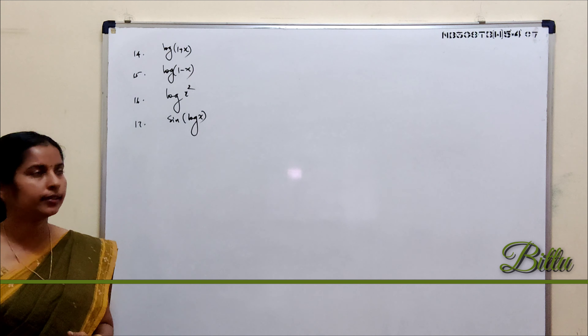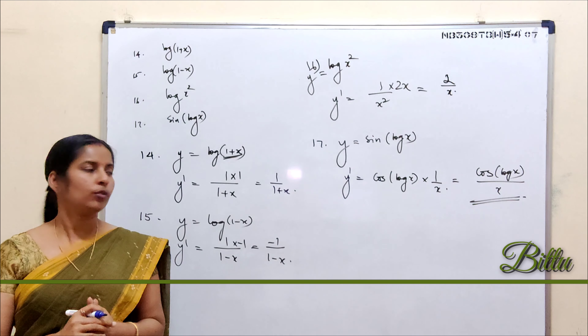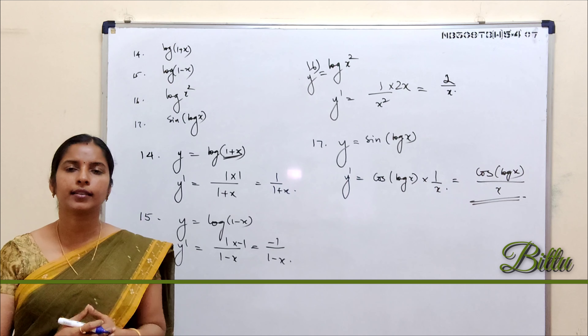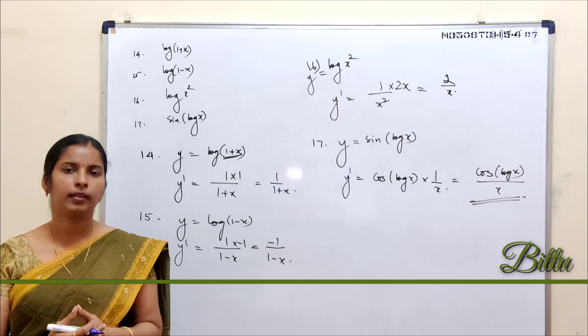For y = sin(log x), the outer function is sine, so the derivative of sin θ is cos θ. In place of θ it is log x. So y' = cos(log x) multiplied by the derivative of log x, which is 1/x. Therefore y' = cos(log x) / x. To summarize the chain rule: identify the outer basic function, apply the standard differentiation result for it, and then multiply by the derivative of the inside function.